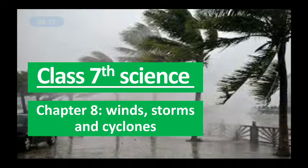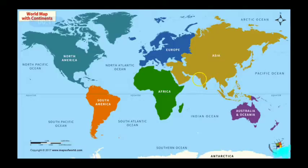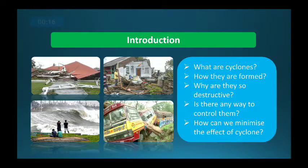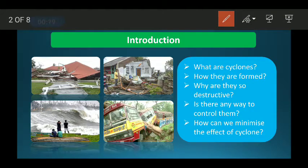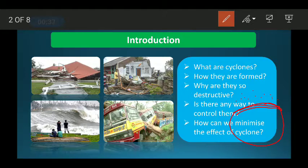First of all, what do you mean by wind? Wind is the movement of air due to the difference in its temperature. Suppose this is the earth, and everywhere around it our atmosphere is filled with air.